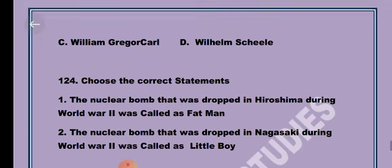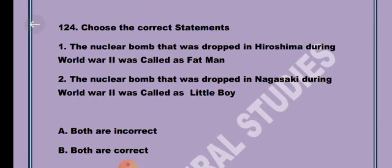Question 24. Choose the correct statement. First statement: a nuclear bomb that was dropped in Hiroshima during World War II was called Fat Man. Second: the nuclear bomb that was dropped in Nagasaki during World War II was called Little Boy. Option A, both are incorrect.